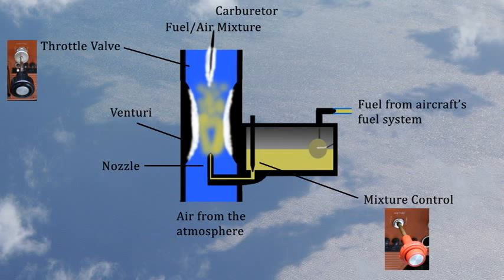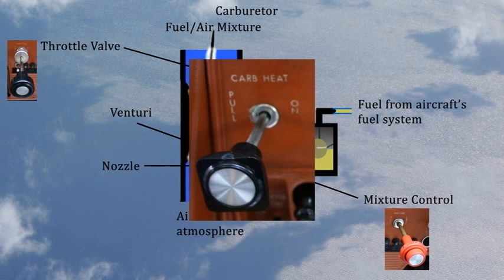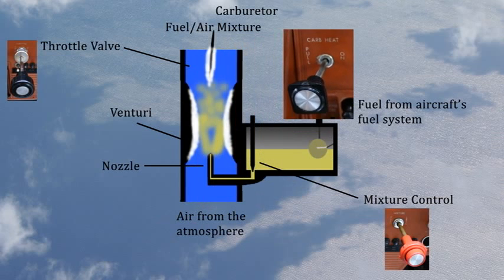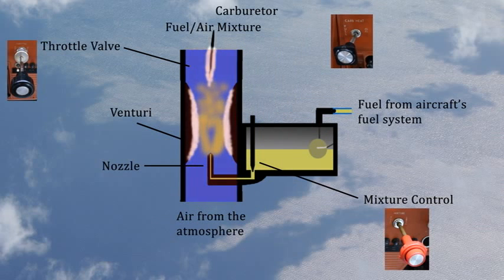A pilot can counteract the formation of carburetor ice through the use of carburetor heat. The carburetor heat control in the cockpit moves a valve which directs intake air through a small heat exchanger. The heat exchanger uses hot engine exhaust to warm the intake air. The use of carburetor heat will also cause an engine performance decrease, due to the air thinning as a result of being heated.